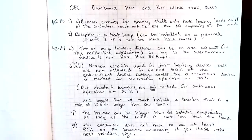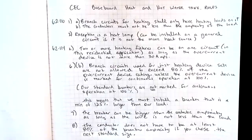We're going to do a short video to describe the rules around baseboard heating and hot water tanks coming out of the 2018 CEC Canadian Electrical Code, Section 62. Rule 62-1101A tells us that branch circuits for heating shall only have heating loads on them. B says the conductors must never be less than the capacity of the load.